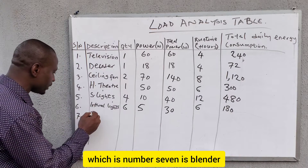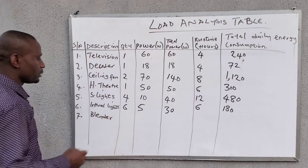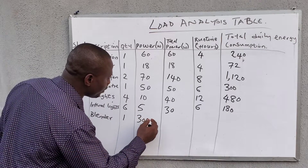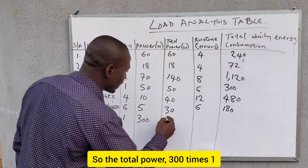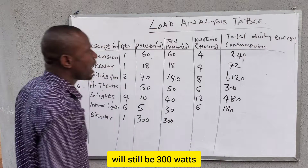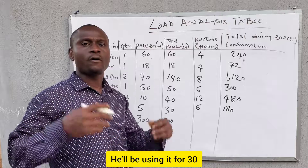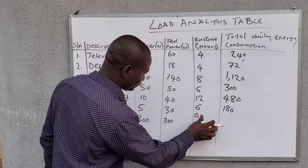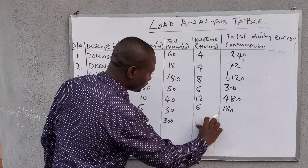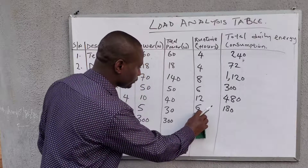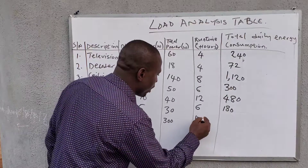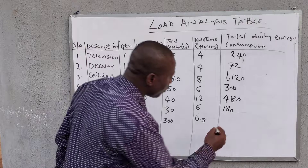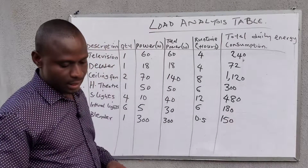Number seven is the blender — quantity one, power rating 300 watts. The total power is 300 watts. The client will use the blender for 30 minutes every day, which is 0.5 hours. So 300 times 0.5 gives 150 watt-hours.